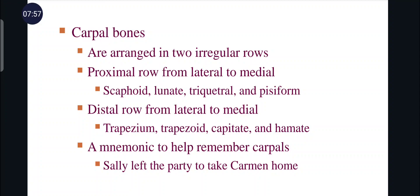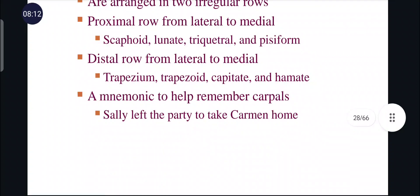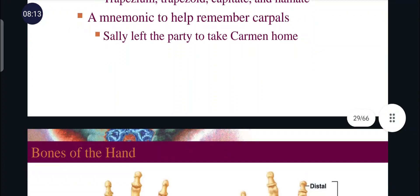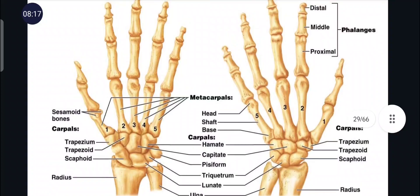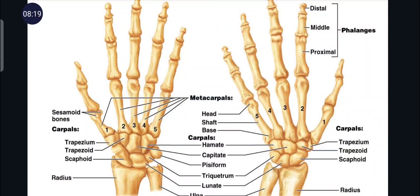A mnemonic to help remember the carpals: 'Sally Left The Party To Take Carmen Home,' representing scaphoid, lunate, triquetral, pisiform, trapezoid, trapezium, capitate, and hamate. These are the bones of the hand — carpals, metacarpals, and phalanges.